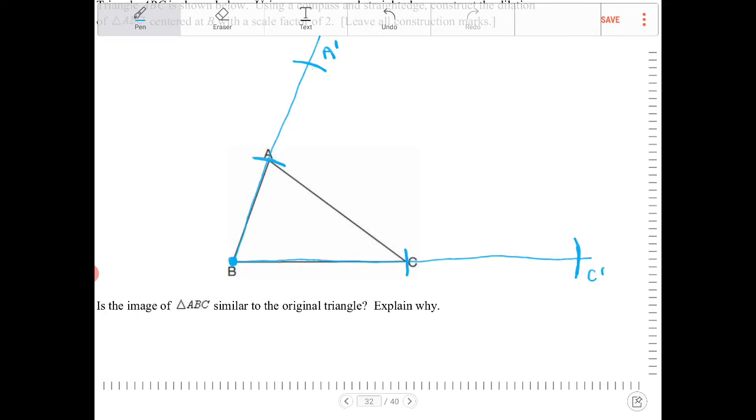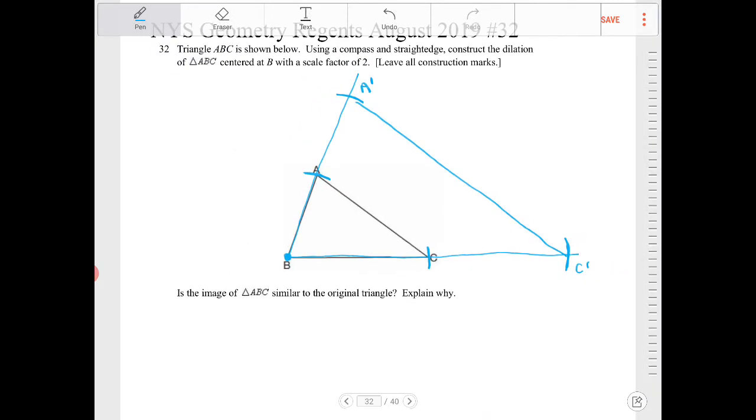Now all you have to do, connect those two points of intersections, and that is going to be your A prime C prime. And if you did all this correctly, the lines A prime C prime should appear to be parallel to line AC.